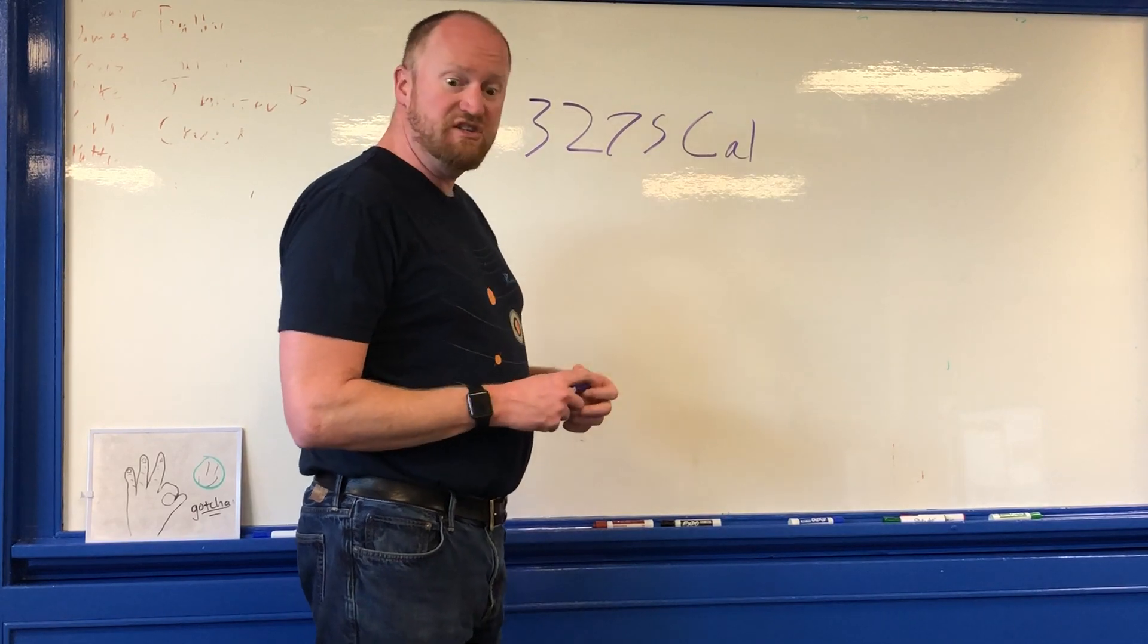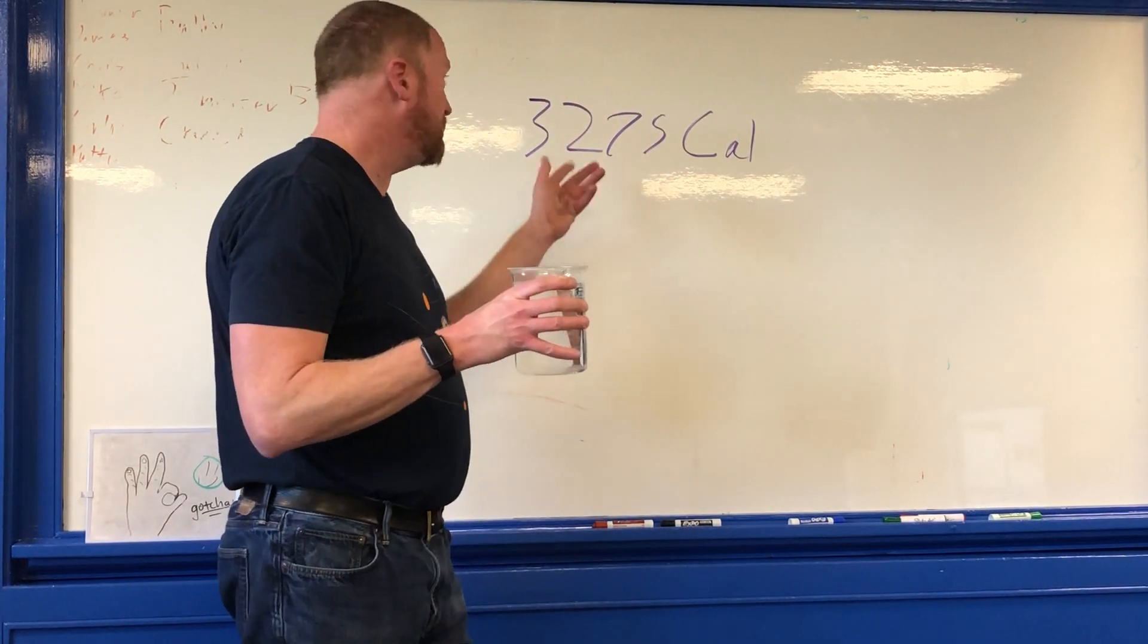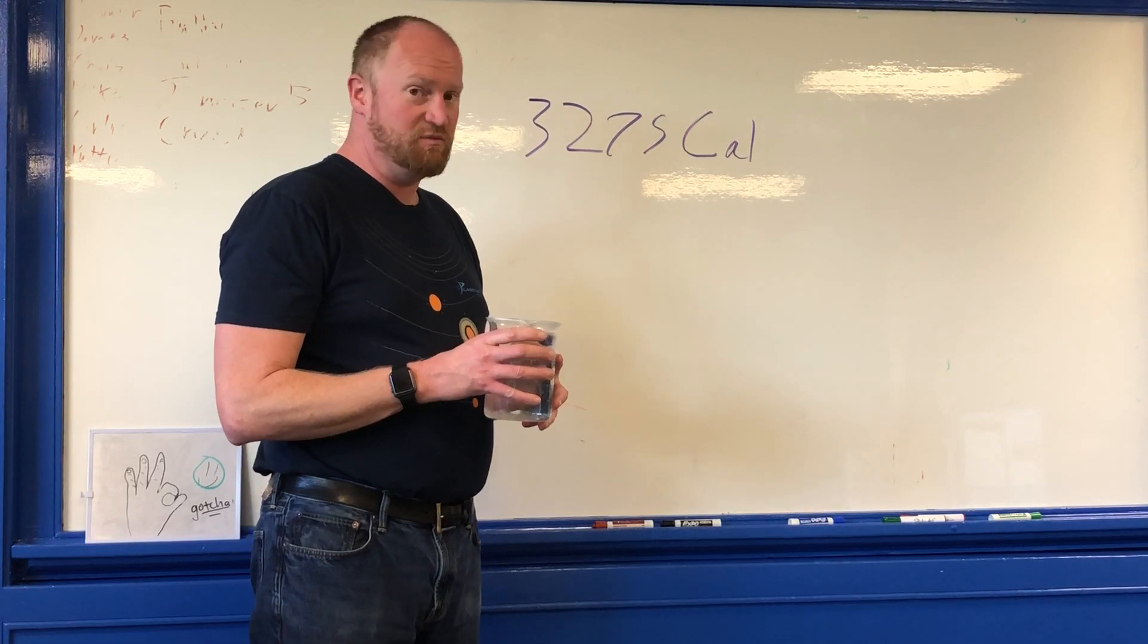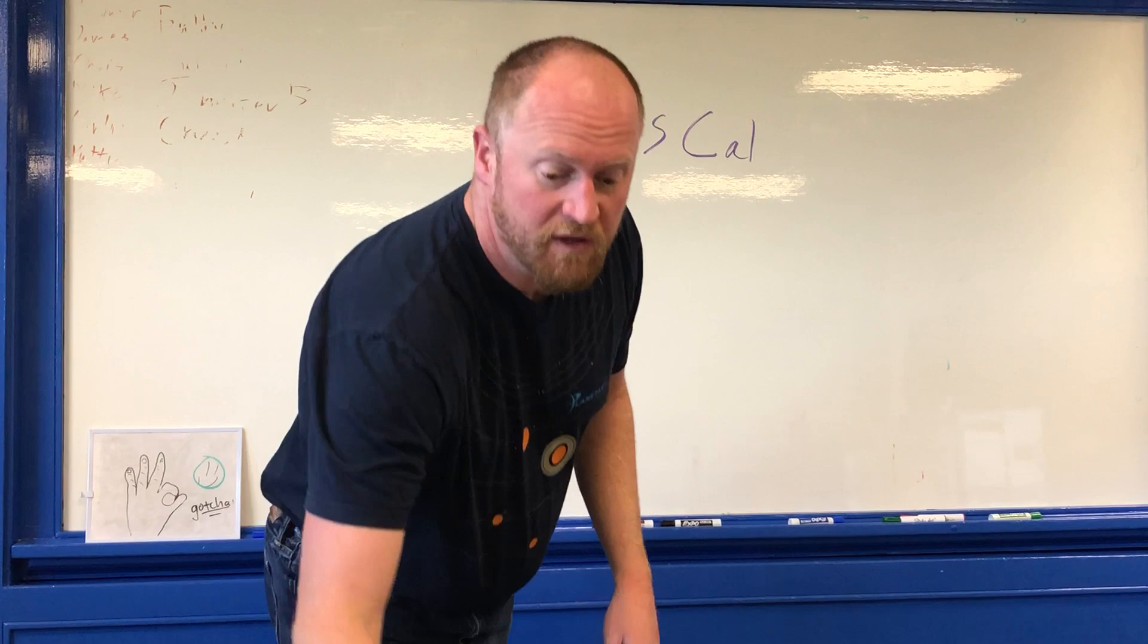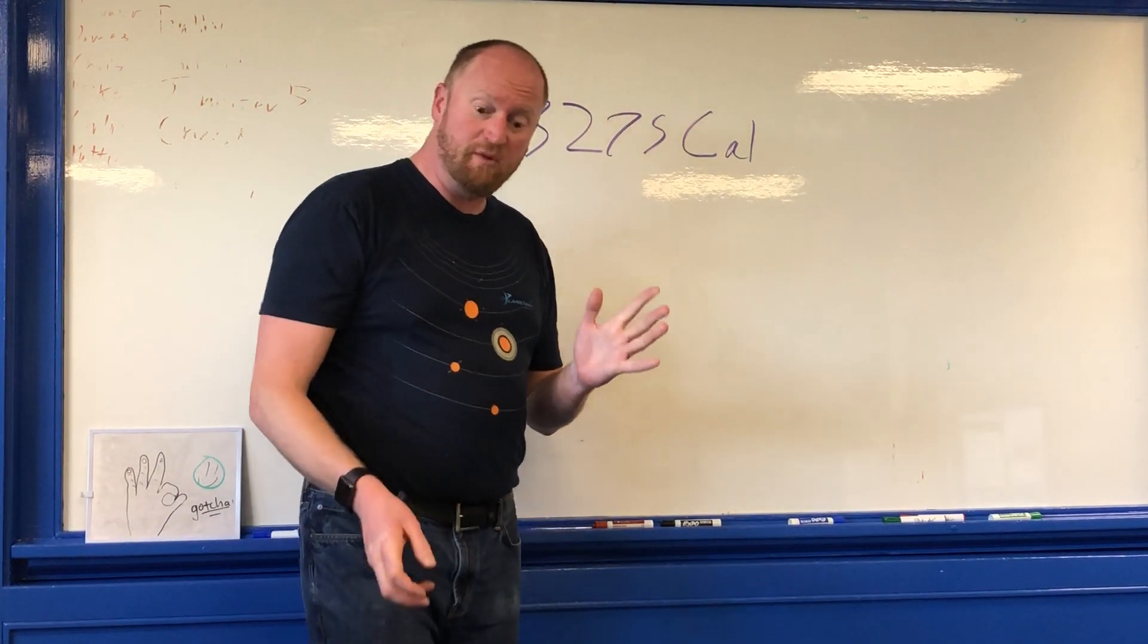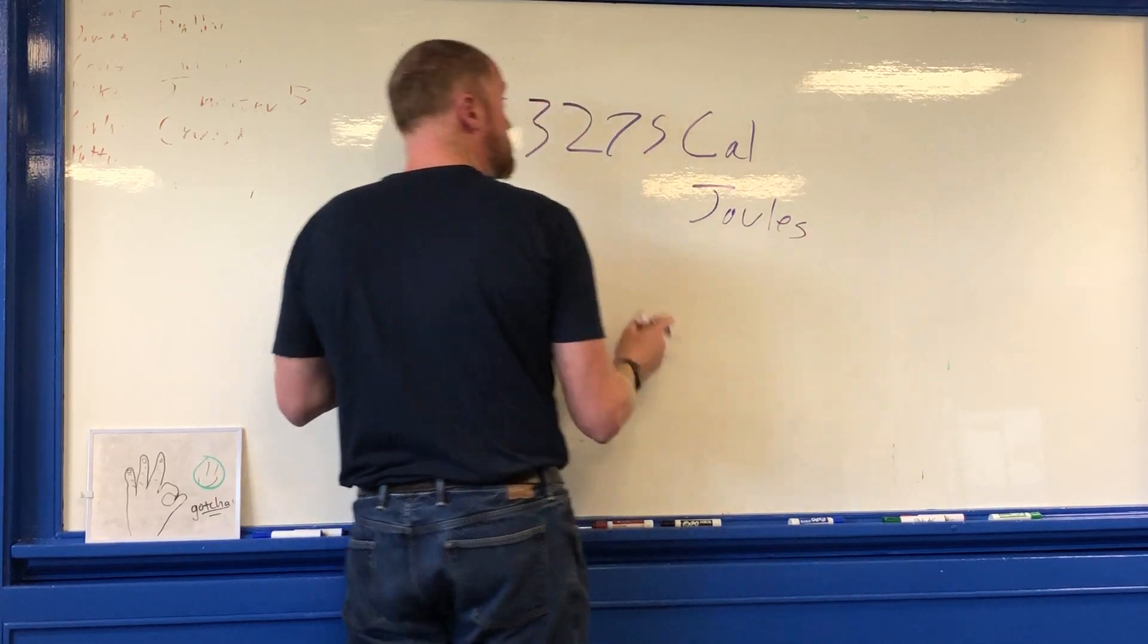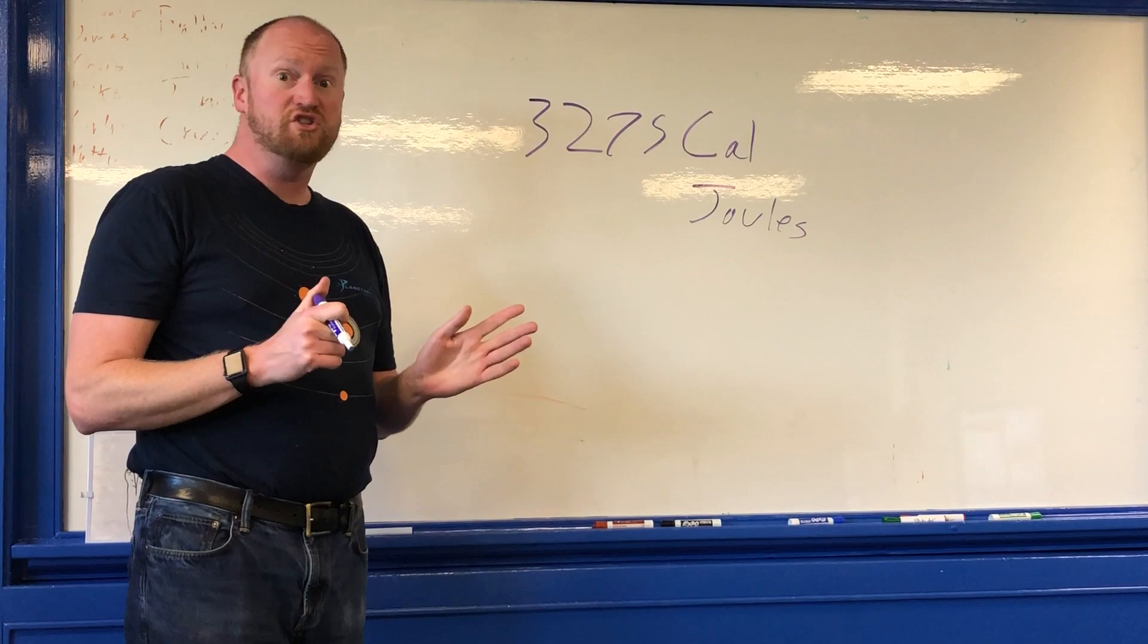Now that is enough to take this liter of water and heat it up by 3,275 degrees, which you're not going to do. Well, it vaporizes also, but moving on. So I want to actually know what that is. We've been dealing with energy in the form of joules. So what is 3,275 calories in joules?